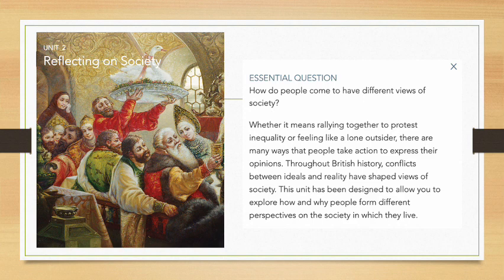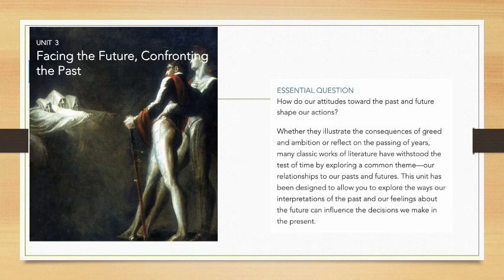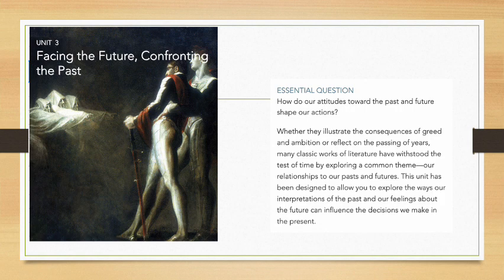Unit 3's theme is facing the future and confronting the past. The essential question is: how do our attitudes towards the past and the future shape our actions? Whether illustrating the consequences of greed and ambition or reflecting on the passing of years, many classic works of literature have withstood the test of time by exploring our relationships to the past and future. This unit explores how our interpretations of the past and feelings about the future can influence the decisions we make in the present.